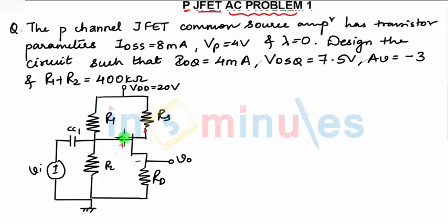Now the question given here, when you look at the diagram, you can see this is the symbol given from the book Neiman. The arrow moving outwards indicates that it is P-channel JFET.